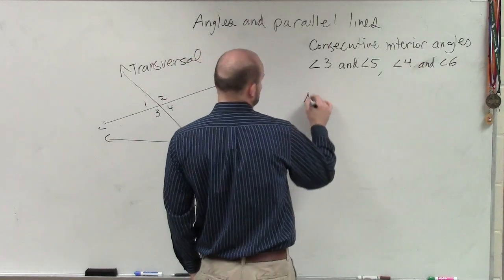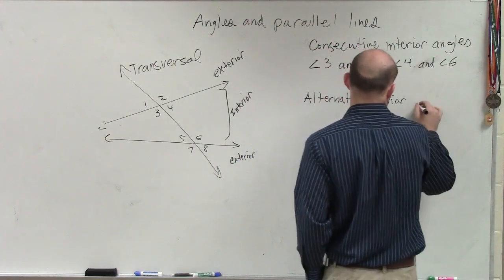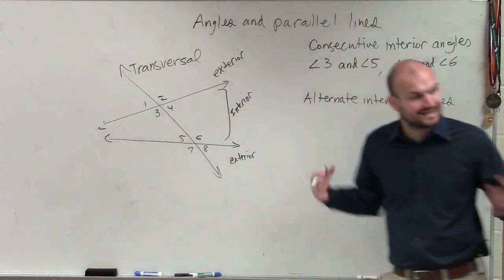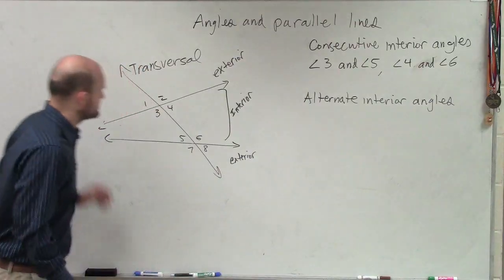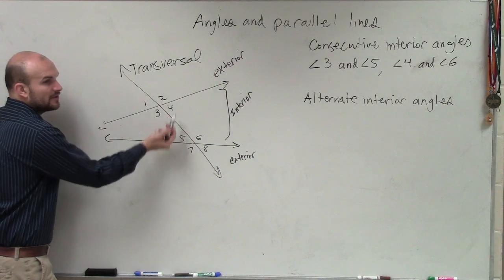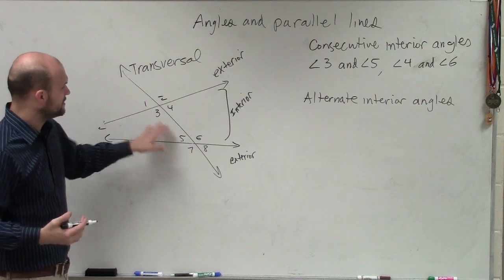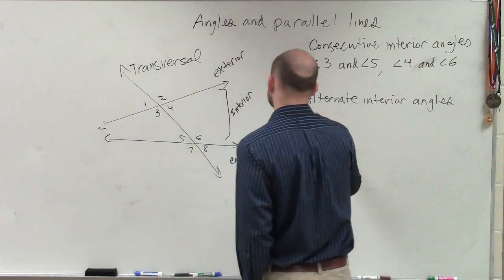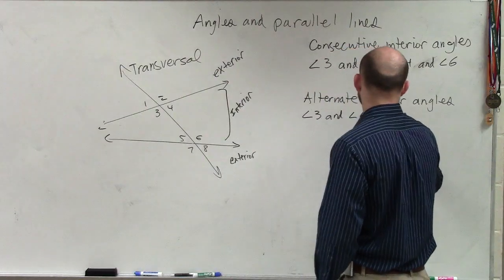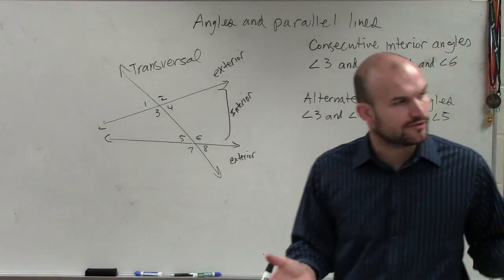The next one we talked about was alternate interior angles. Remember, these interior — we're only talking about angles that are in the interior. Notice that the consecutive are on the same side of the transversal, but when they're alternating, now they're on opposite sides of the transversal. So then you have three and six, four and five. Your alternate interior angles were angle three and angle six, and angle four and angle five.